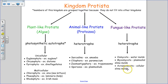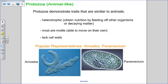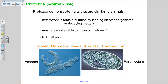The fungus-like protist phyla all end in 'mycata,' meaning fungus. The animal-like ones — protozoa — are grouped because they have traits similar to animals: they're heterotrophic, most are motile, and they lack cell walls. Two popular representatives you should be able to label are the amoeba and paramecium. We've already seen a paramecium in the very first lab.